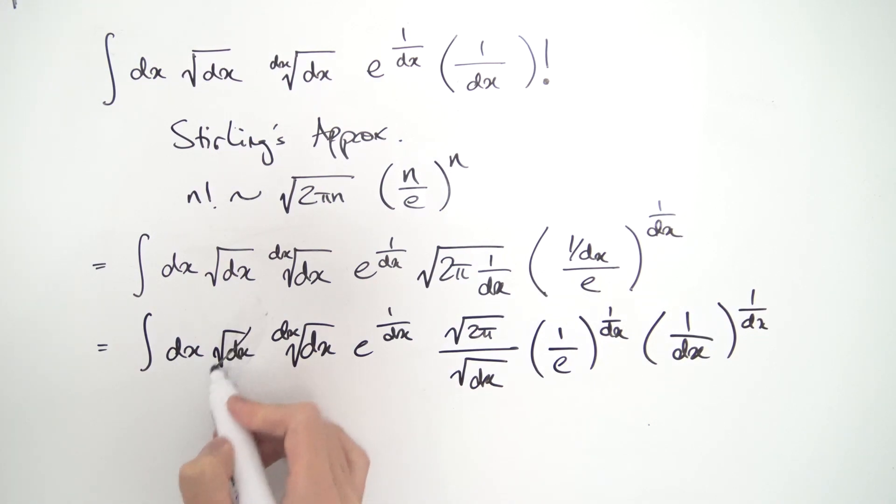And notice, some things cancel and these dx's over here, what else cancels? Notice we have e to the 1 over dx. That's gone because we have 1 over e to the 1 over dx. And what else happens over here?